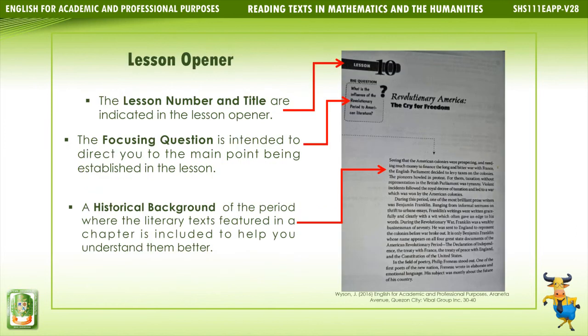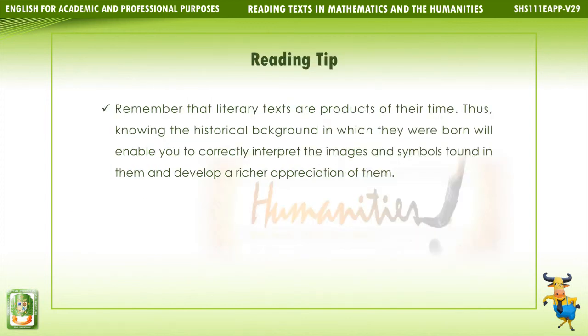The lesson number and title are indicated in the lesson opener. The focusing question is intended to direct you to the main point being established in the lesson. A historical background of the period where the literary texts featured in a chapter is included to help you understand them better. Reading tip: Remember that literary texts are products of their time — knowing the historical background in which they were born will enable you to correctly interpret the images and symbols found in them and develop a richer appreciation of them.